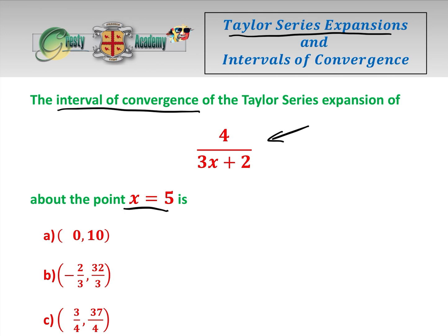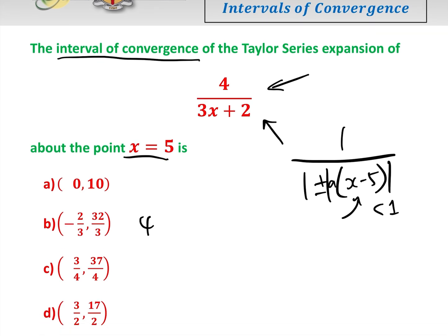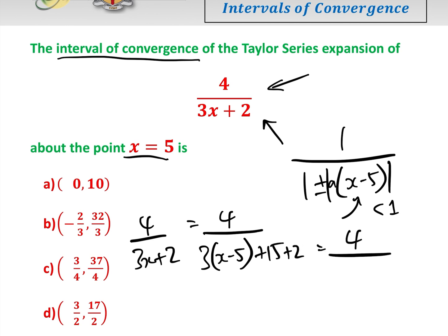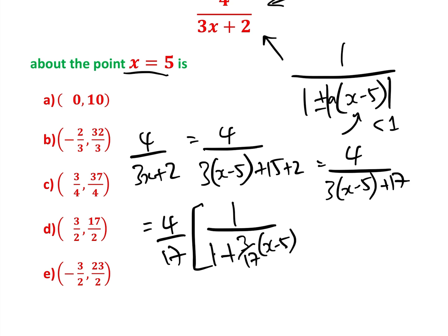Here's the trick. What we need to do is get 4 over 3x plus 2 in the form 1 over 1 plus or minus (x minus 5) times something. It will converge when the modulus of that is less than 1. So 4 over 3x plus 2 equals 4 over 3x minus 5 plus 17, which gives us 4 over 17 times 1 over 1 plus 3 seventeenths times (x minus 5). It's now in the form we wanted.